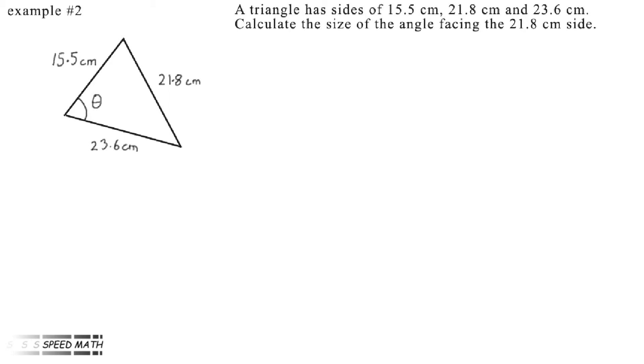As with the previous example, we need to start by quoting the law, the cosine rule, and stating the equation. So using the cosine rule: a² equals b² plus c² minus 2bc cos(A).